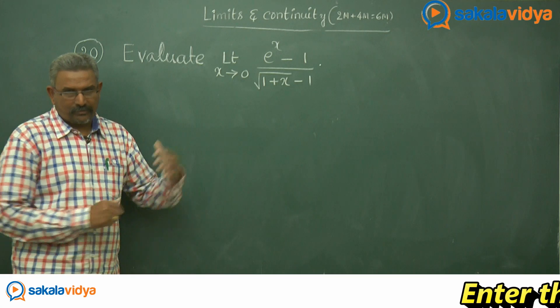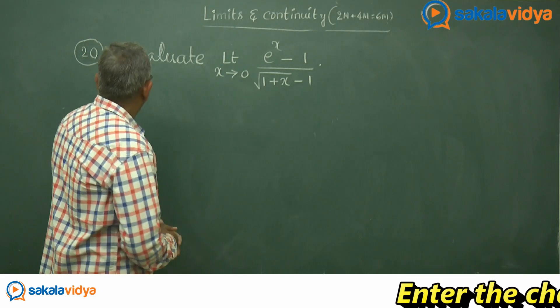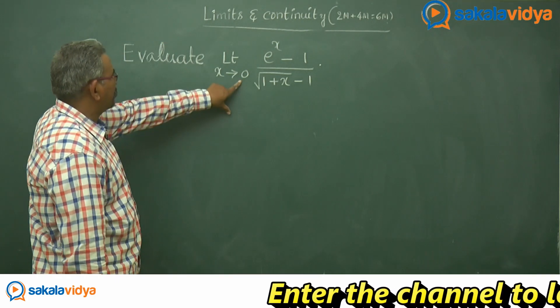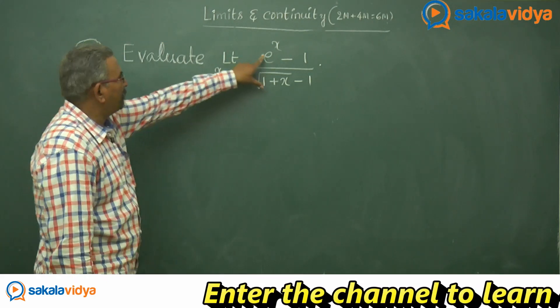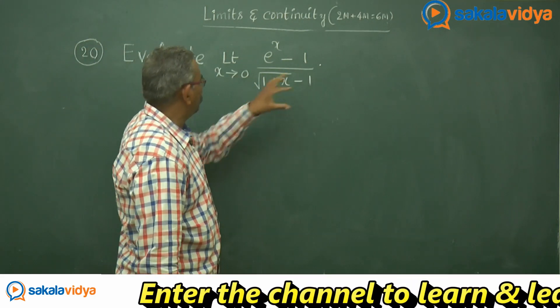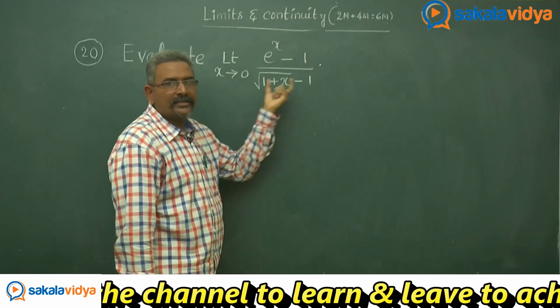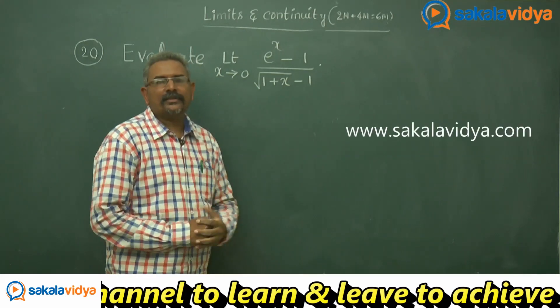Let us solve this problem. Evaluate limit x tends to 0 of e to the power x minus 1, divided by root of 1 plus x minus 1.